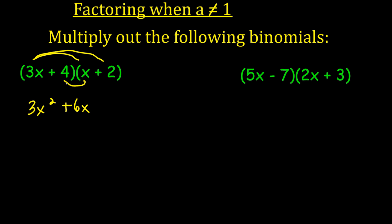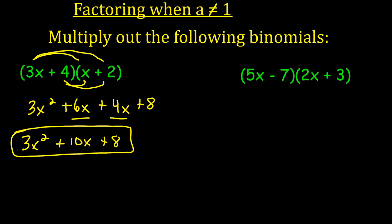I'm going to do the same thing with the 4. I'm going to distribute that into both things. So 4 times x is 4x, and 4 times 2 is 8. When I combine like terms, I've got 6x and 4x. That's going to be 10x. So this is my final answer.